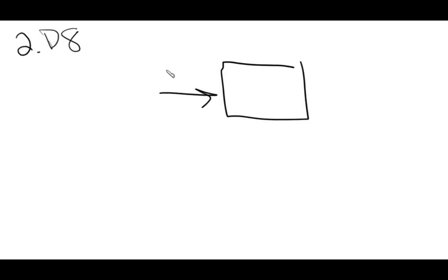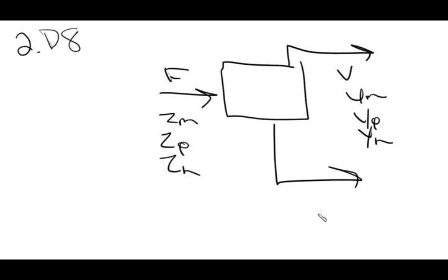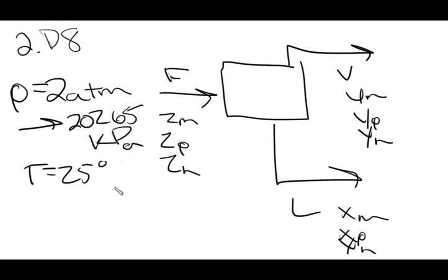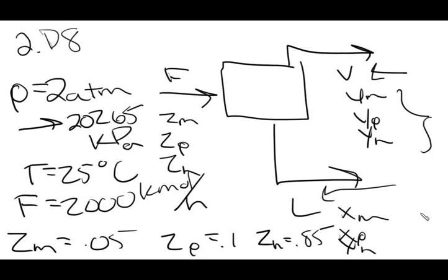Our system is a flash chamber. We have a feed going in at a certain composition of methane, propane, and hexane. We have vapor coming off the top and liquid coming off the bottom, each at a certain composition of methane, propane, and hexane. The problem gives us the pressure at 2 atm, which converted is 202.65 kilopascals, and a temperature of 25 degrees Celsius. The feed rate is 2,000 kilomoles per hour, with Z_P equal to 0.1 and Z_H equal to 0.85. We need to solve for vapor flow rate, vapor compositions, liquid flow rate, and liquid compositions.